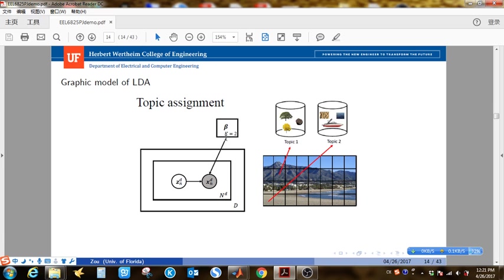Each word is assumed to be drawn from the word distribution of each topic. For example, this rock patch is drawn from the mountain topic and this sand patch is drawn from the ocean topic. Similarly, we can compute the topic proportion in this image, which is 14% mountain topic and 16% ocean topic.